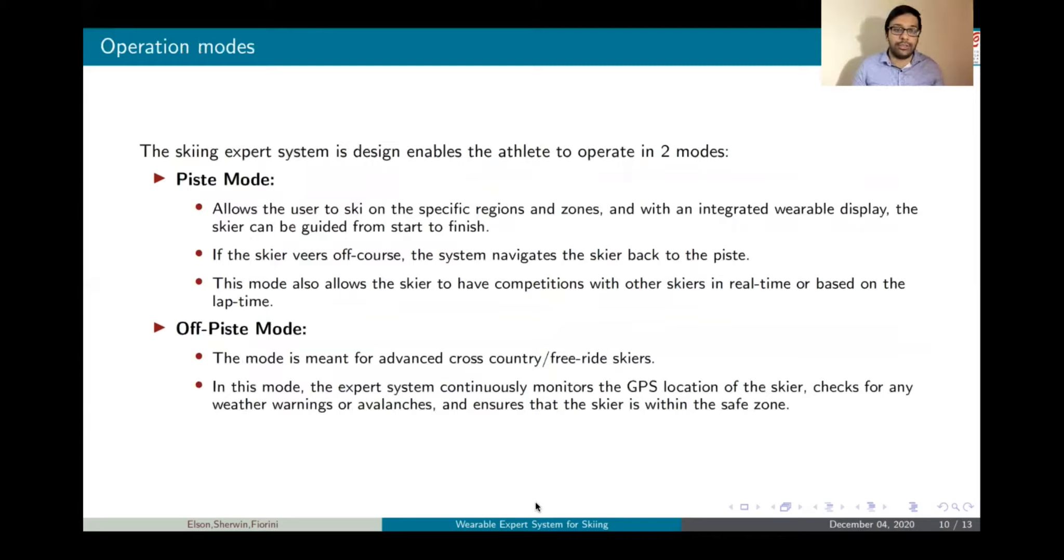Next up, we have the operation modes. There are two operation modes. Normally in skiing, they are the piste mode and off-piste mode. In piste mode, there is a particular map or a location. Our expert system is also designed to take up these two modes. In the piste mode, it allows the skier to ski within specific regions or zones. We also have map information of that zone, and we always guide the skier. In case the skier moves out of the zone, we guide the skier using directions in the display unit so the skier can come back to the location and continue skiing activity. This also helps us to monitor the time taken by the skier to perform a lap or sprint, so in case of a competition, we can measure the real-time performance of each skier and rank them accordingly.